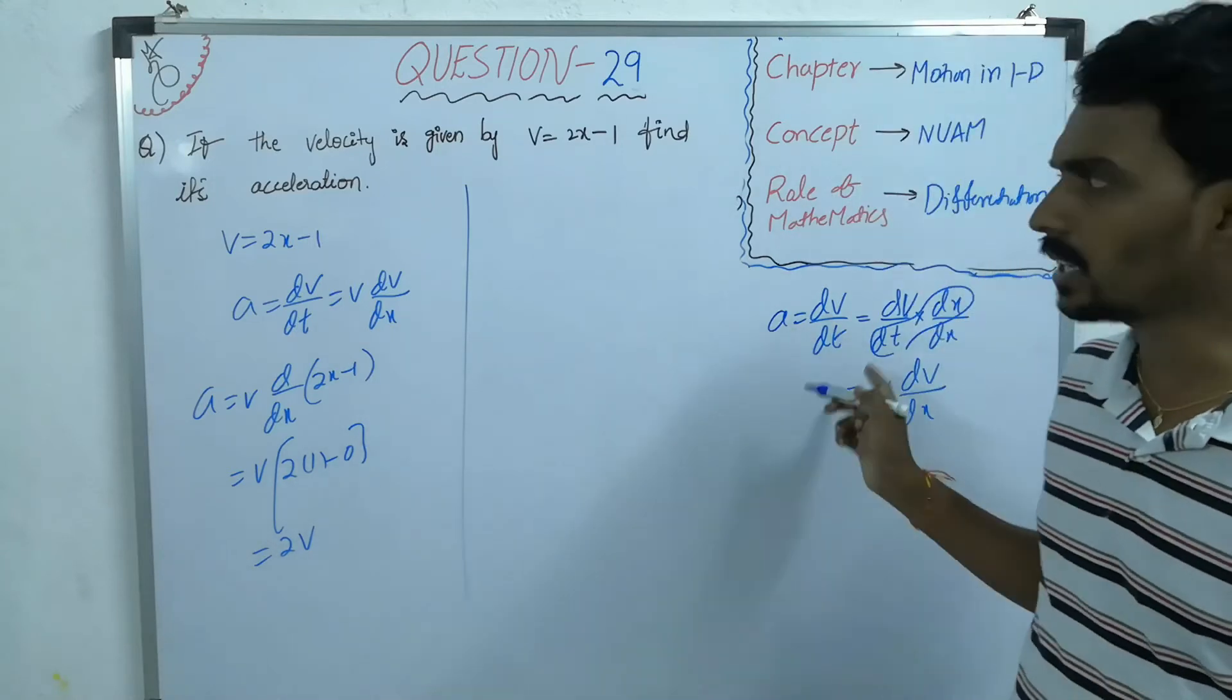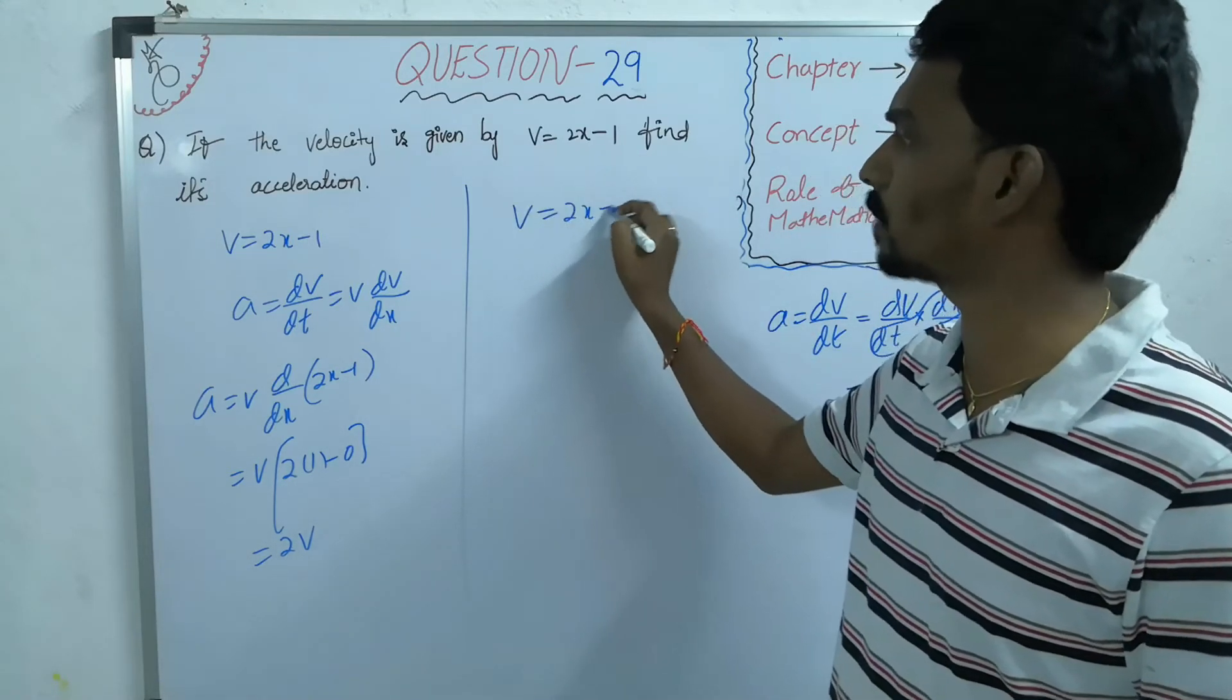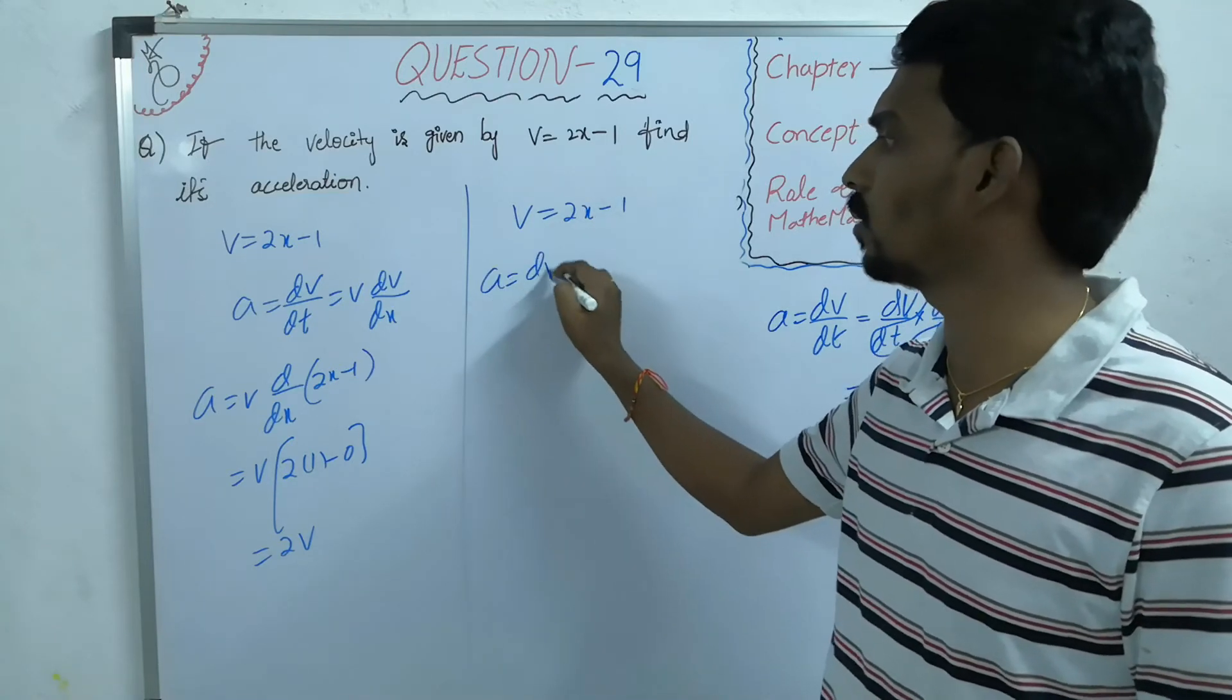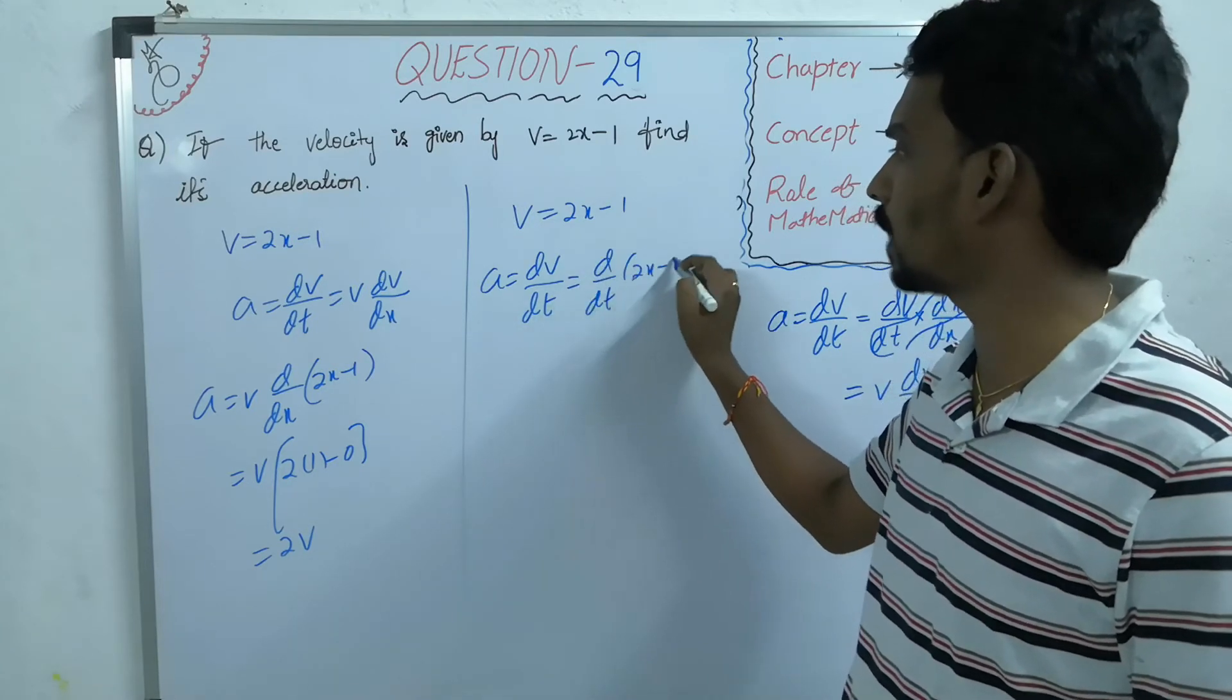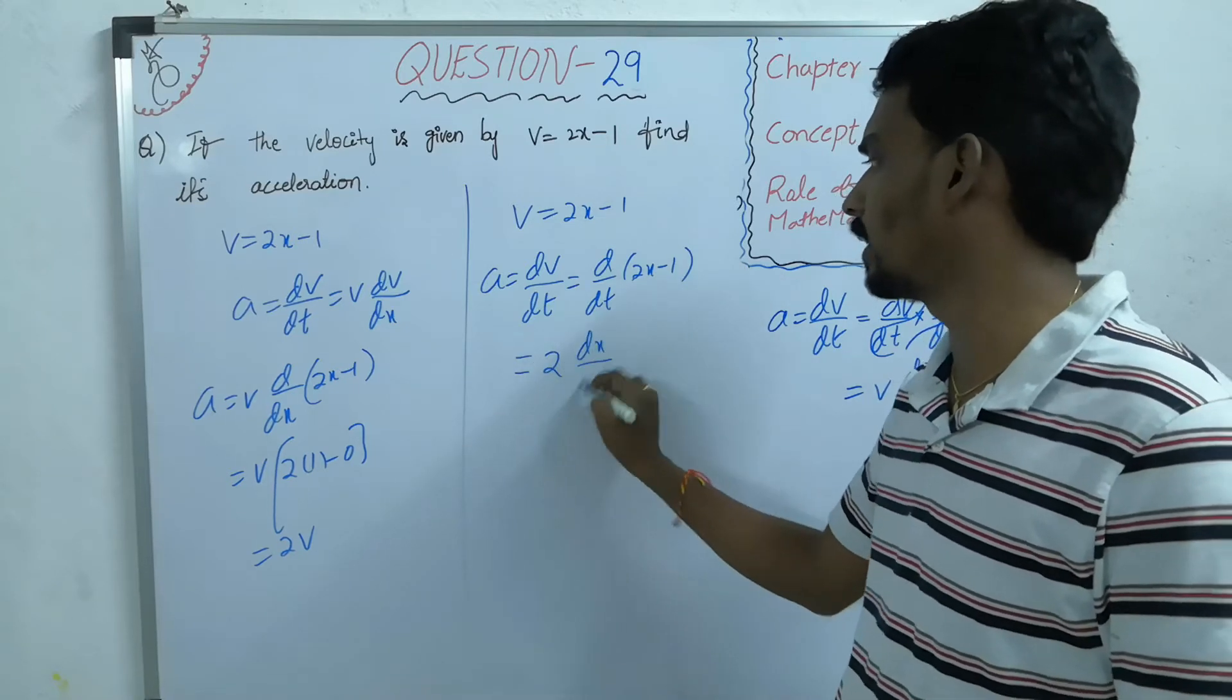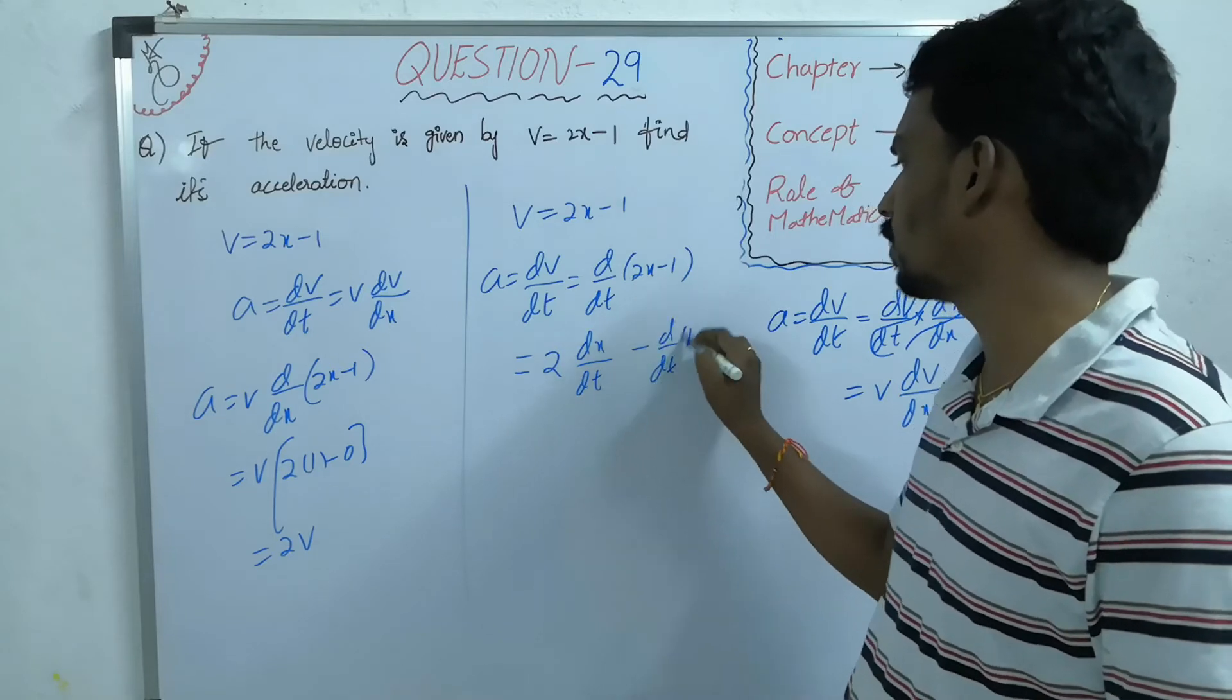Or else, this is after manipulation you have done the question. Now, if you take a equal to dv by dt of 2x minus 1 equal to 2 times dx by dt minus dv by dt of 1.